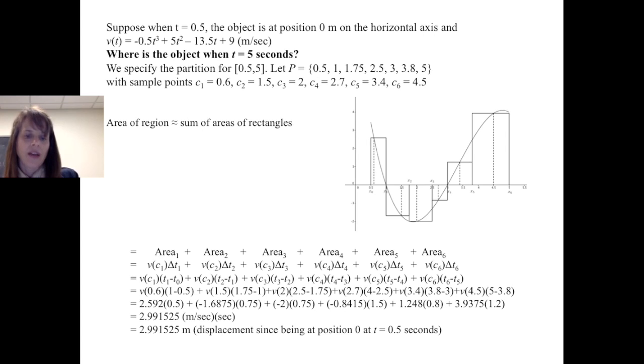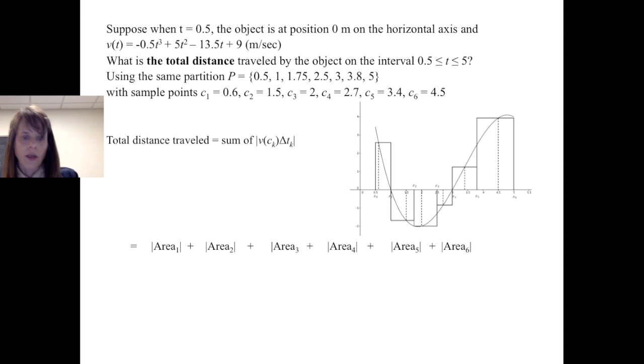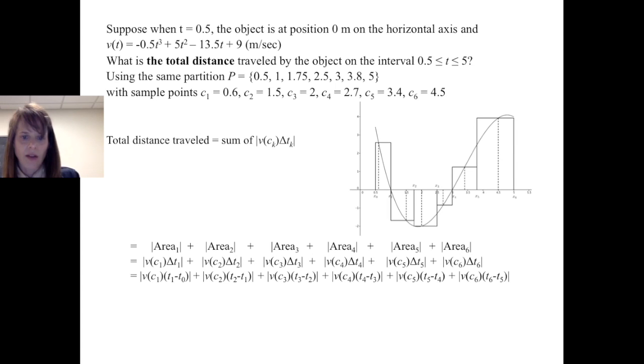Now, this calculation of the displacement is different than calculating the total distance. The total distance traveled by the object on this interval is looking at the sum of the absolute value of the velocities times the time interval. Because here we're taking into account that the area is not going to be negative. So when I calculate the absolute value of each of the areas, it's the same calculations except for now we're looking at the absolute value of the terms.